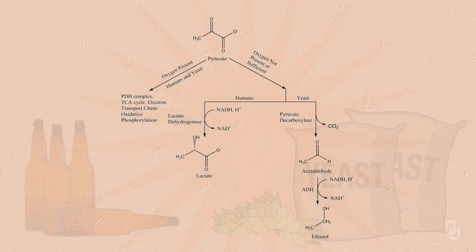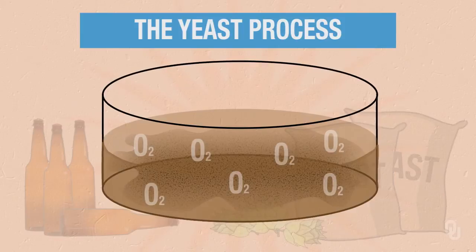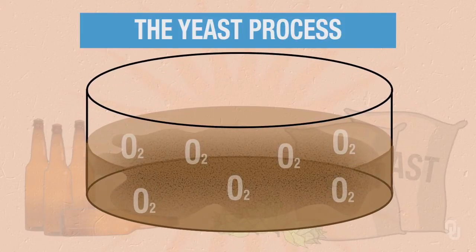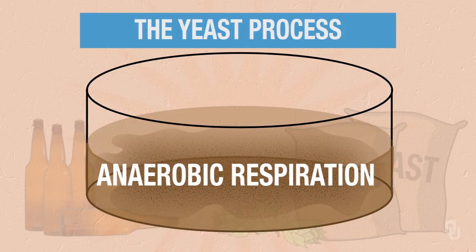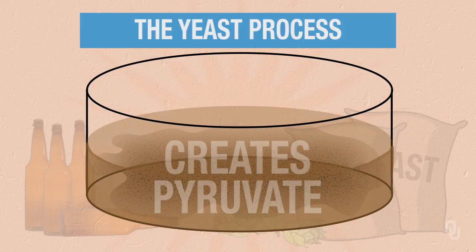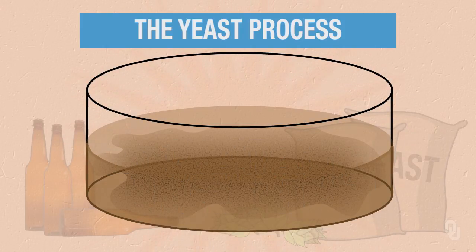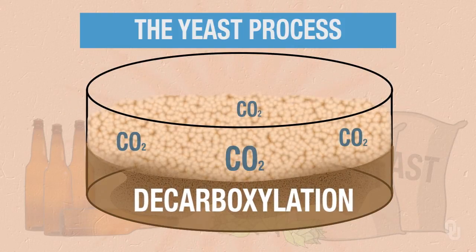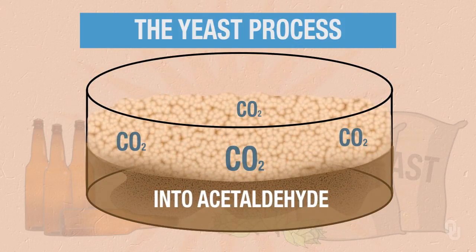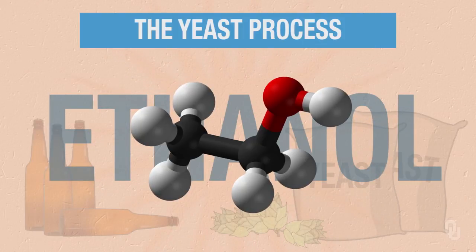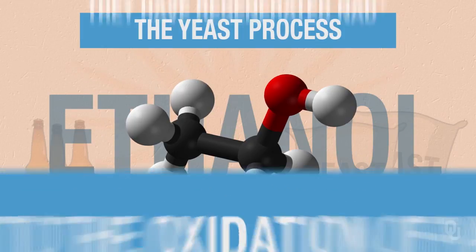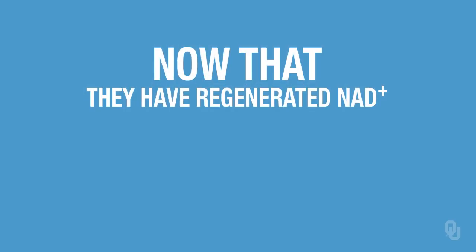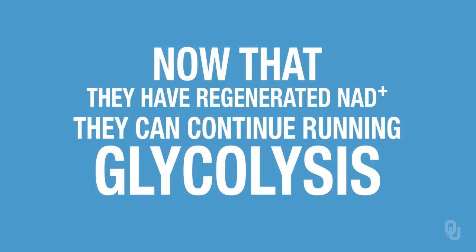That is the secret to how yeast make ethanol. We grow them in conditions where we deprive them of oxygen, forcing them to go anaerobic. They take the pyruvate — the end product of glycolysis — decarboxylate it to acetaldehyde, then reduce it to ethanol, concurrent with the oxidation of NADH to NAD+. Now that they've regenerated NAD+, they can continue running glycolysis.